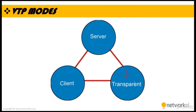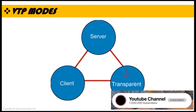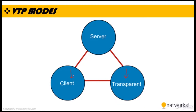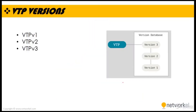VLANs that are created, renamed, or deleted on Transparent switches are local to that switch only. A switch in Client mode cannot create, modify, or delete VLANs. We are going to make an excellent Packet Tracer lab about the VTP modes, and you will see the difference between Server, Client, and Transparent in the lab exercise and better understand what is going on between these modes.